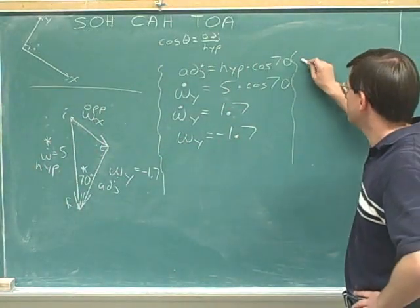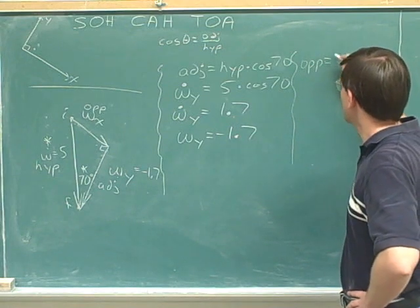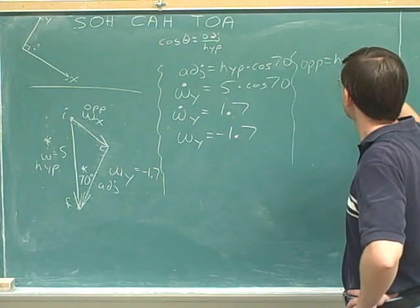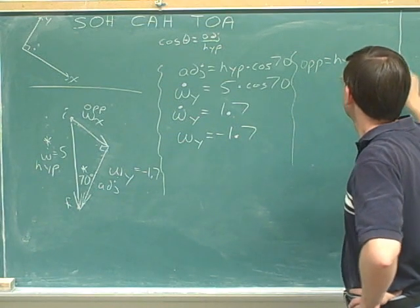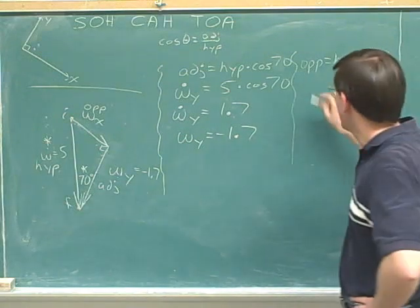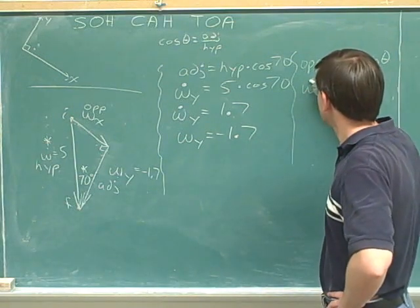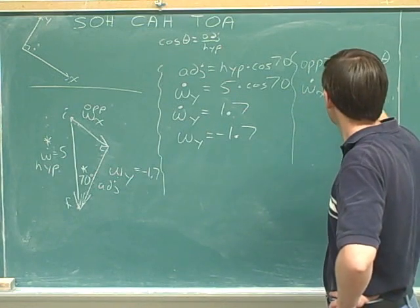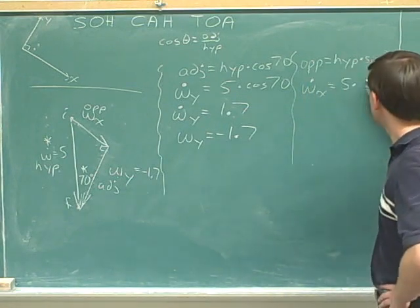Now we're ready to use trigonometry to find the opposite side using the sine. For the opposite side, we'll use the magnitude of Wx. The hypotenuse is still 5, and we have the sine of 70.